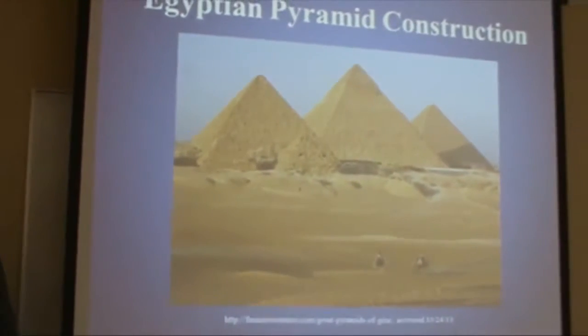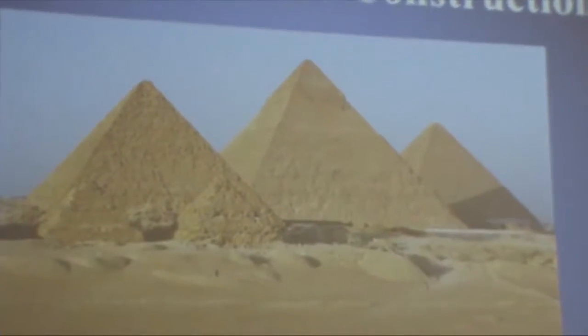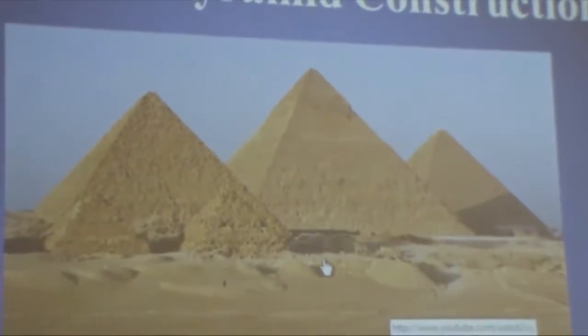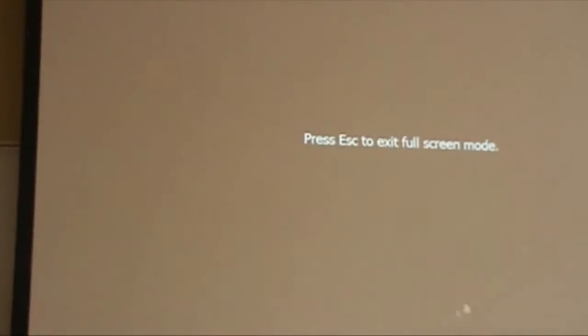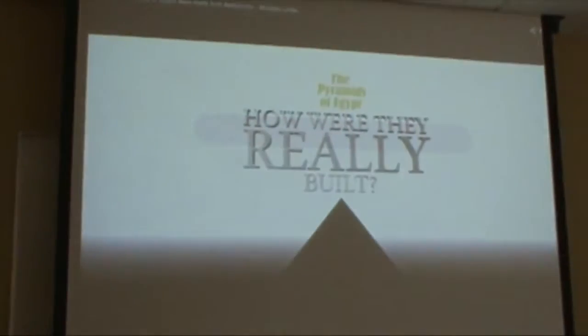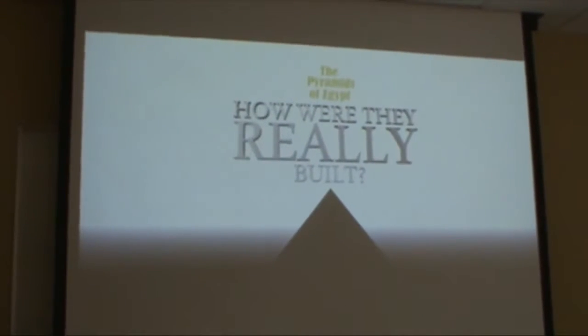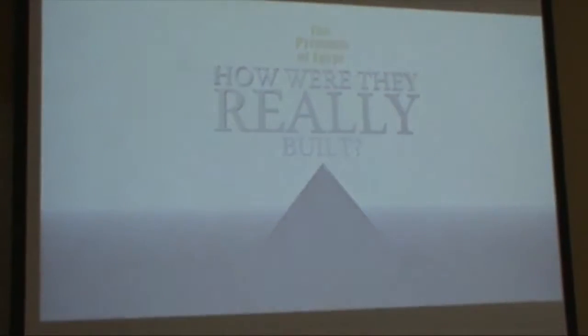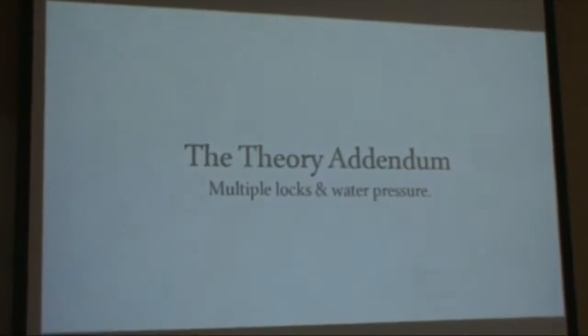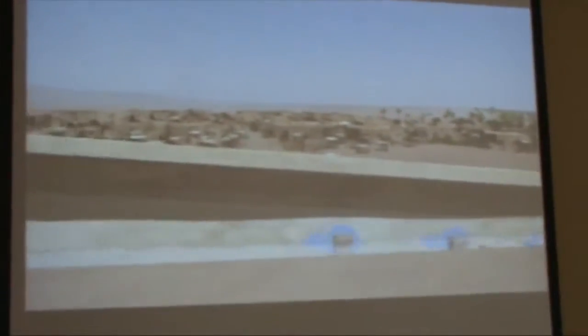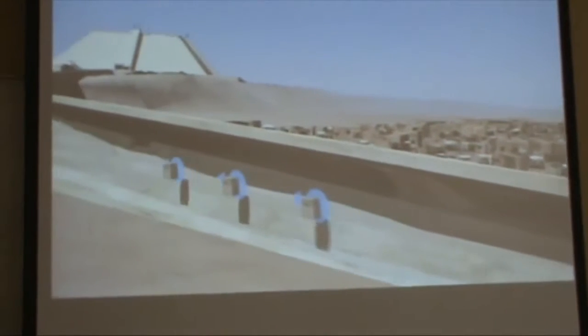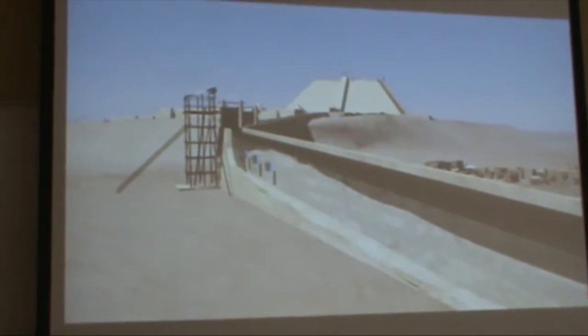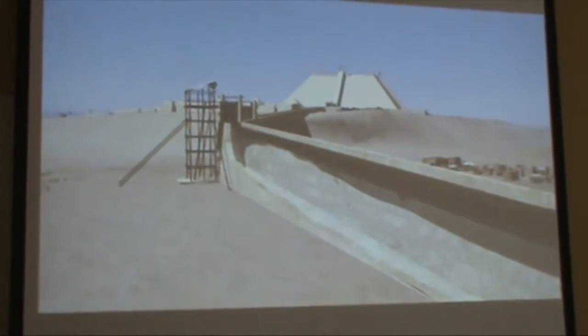One thing everybody's aware of is the pyramids. There's a long-standing accepted belief that these pyramids were constructed of stone that was quarried and hewn in Egypt. The mainstream theory involves getting massive limestone blocks from the quarry all the way up to the pyramid construction site, and then up the side of the pyramid using flotation in simplistic terms.